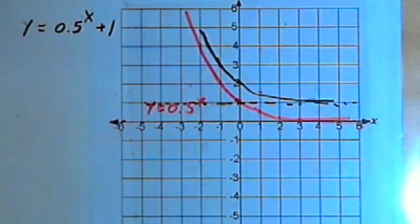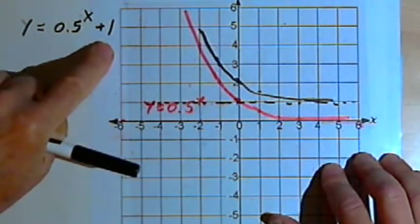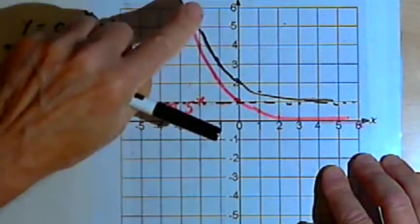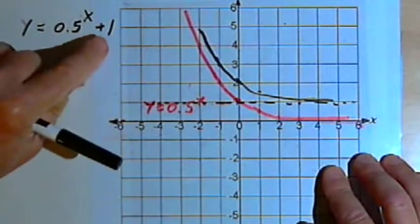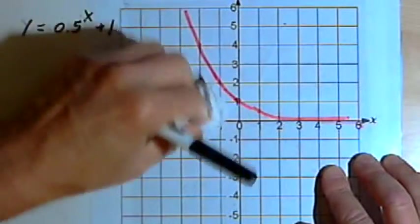So that's vertical translations or vertical shifts. If I add a positive number after the exponential expression, it raises everything up. If I had a negative number, it would drop everything down.